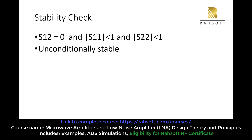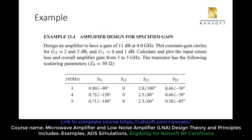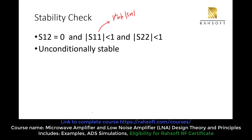So here, because S12 is 0, gamma_in is equal to S11. And because S11 is less than 1 — as you can see in the example — gamma_in under this condition is going to be less than 1. This means that our amplifier is stable.